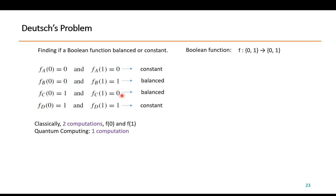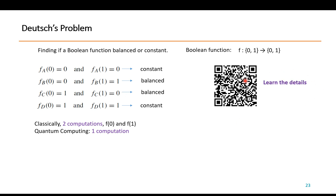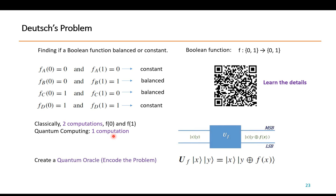The question is: can we find out whether the function is balanced or constant quickly? Classically you need two computations — input 0, check the output, input 1, check the output, then compare. But with quantum computing you only need one computation. To implement this we need to encode the function F into a so-called quantum oracle.